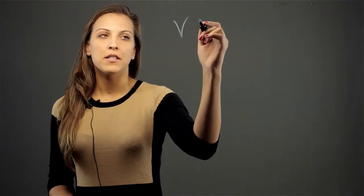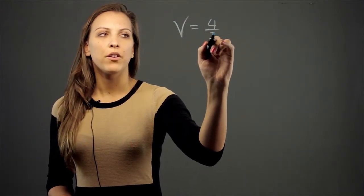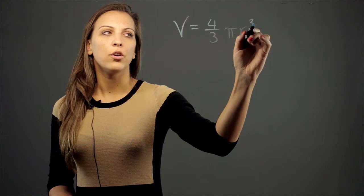For the volume of a sphere, there's a simple formula. The volume is 4/3 π r³.